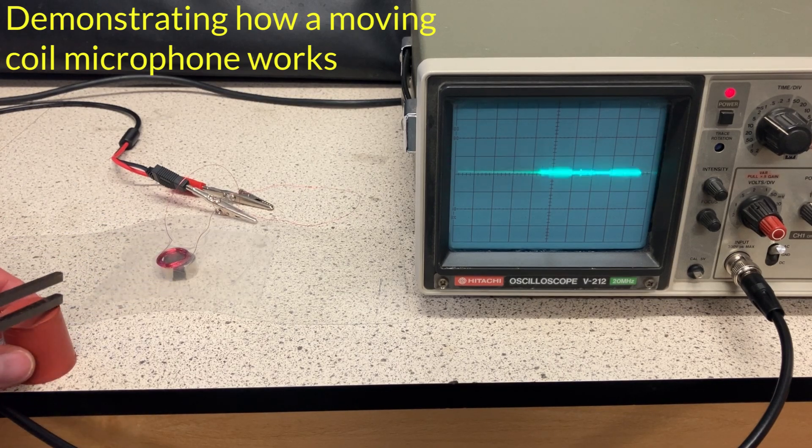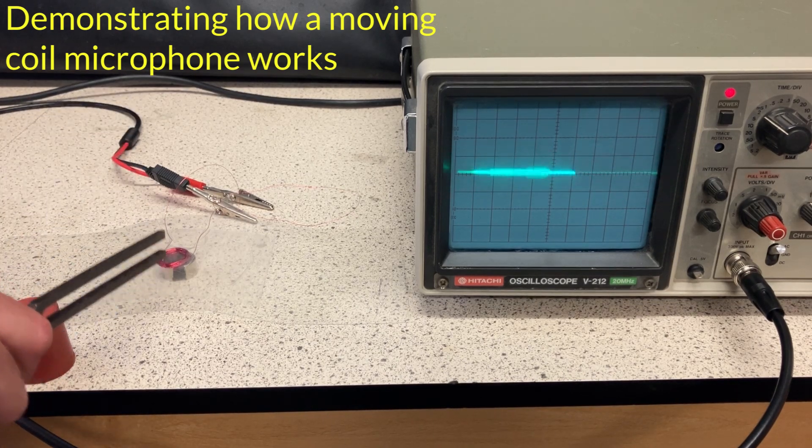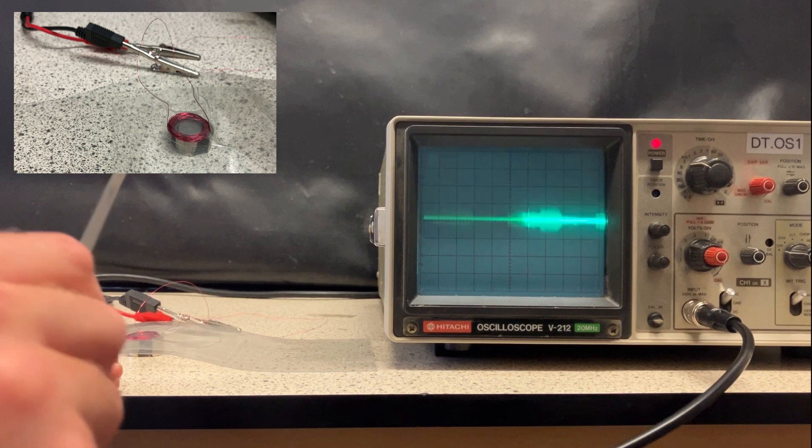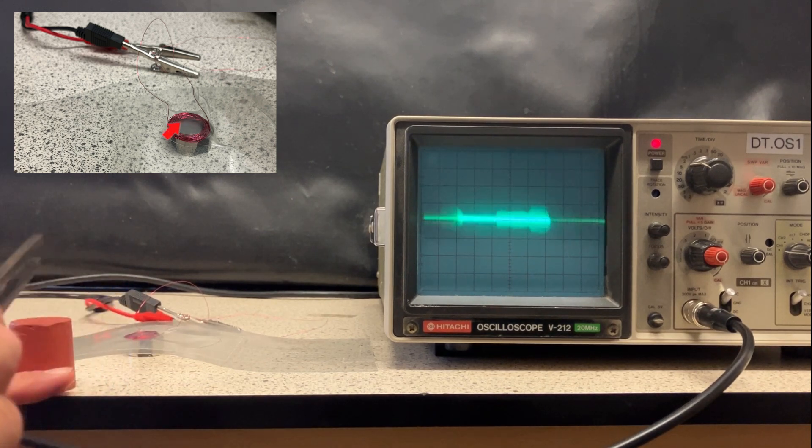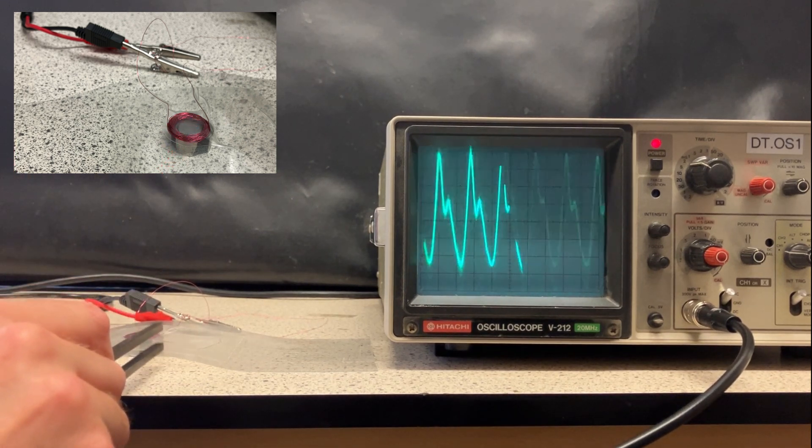In this video we're going to see how a moving coil microphone works. The idea is pretty simple. I've stuck a coil of copper wire onto a plastic sheet above a neodymium magnet.